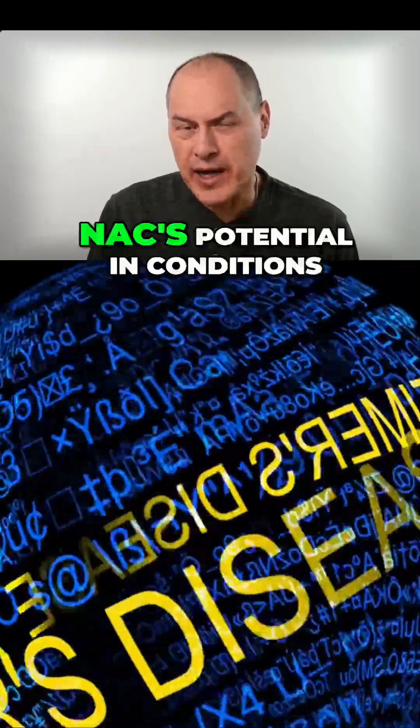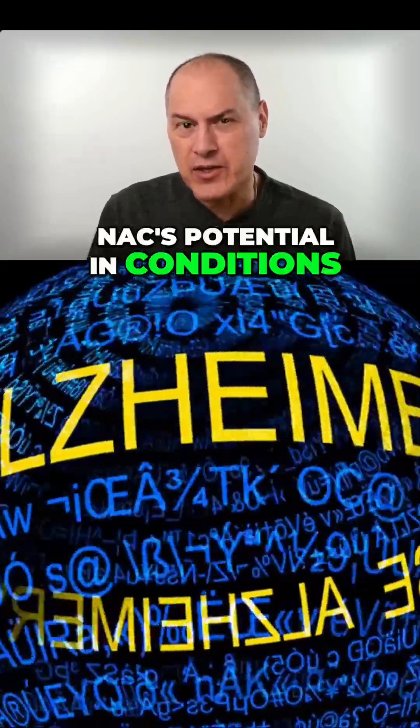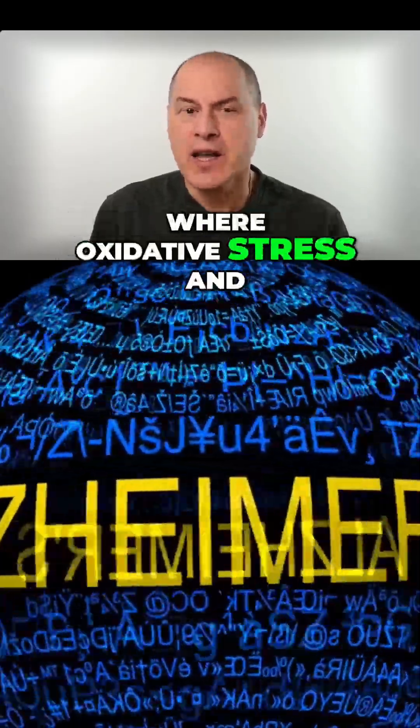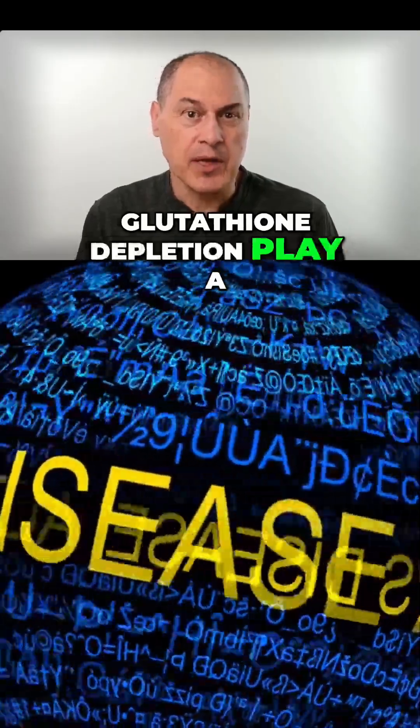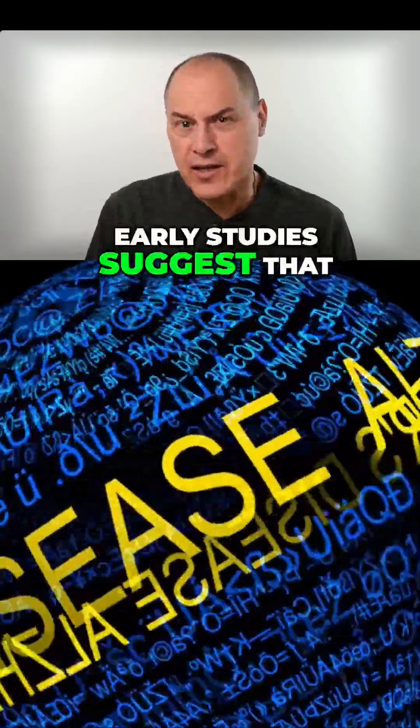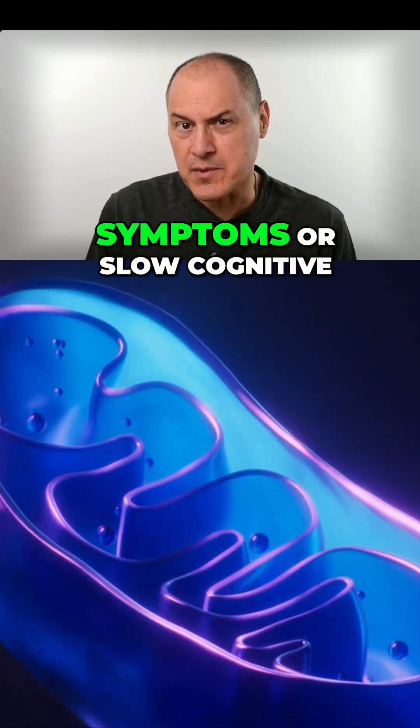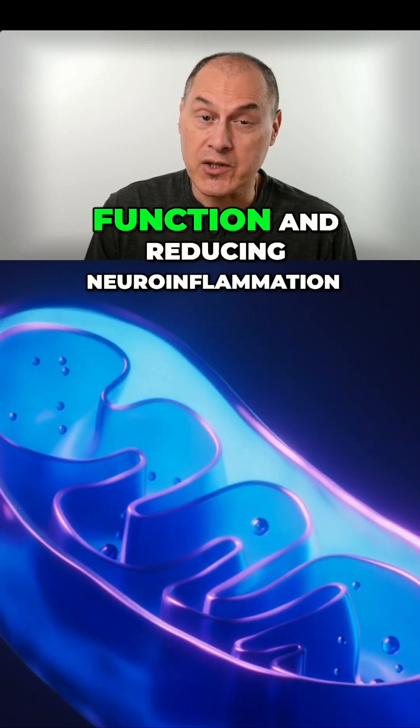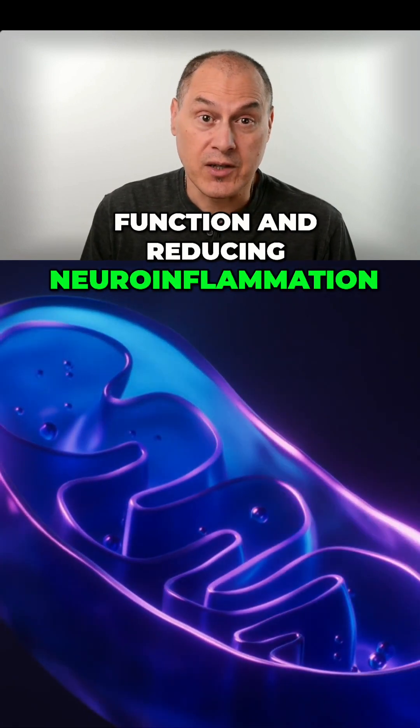Emerging research is exploring NAC's potential in conditions like Alzheimer's and Parkinson's disease, where oxidative stress and glutathione depletion play a major role in disease progression. Early studies suggest that NAC may help reduce symptoms or slow cognitive decline by improving mitochondrial function and reducing neuroinflammation.